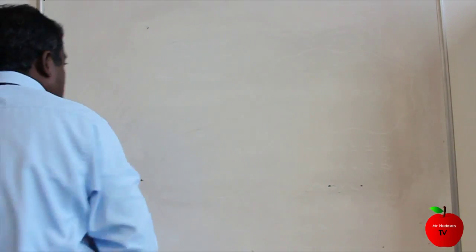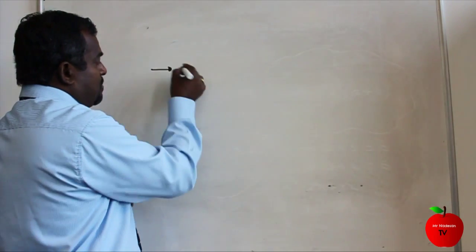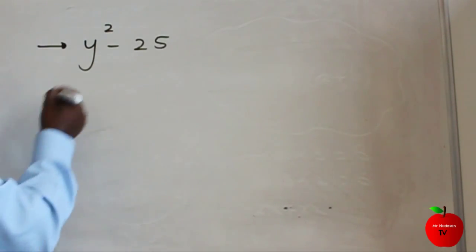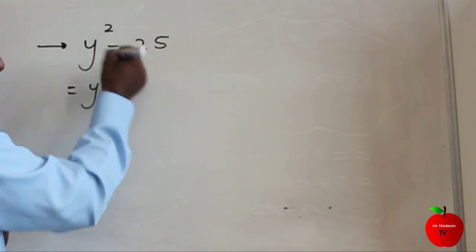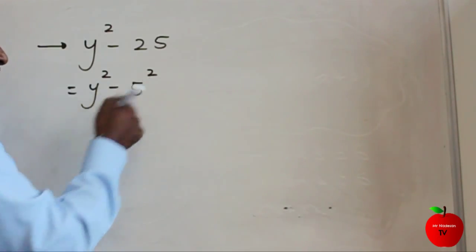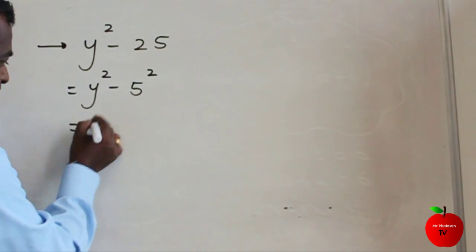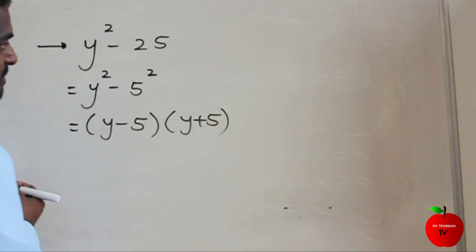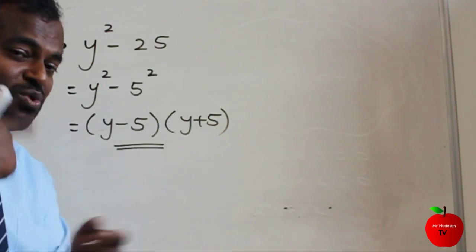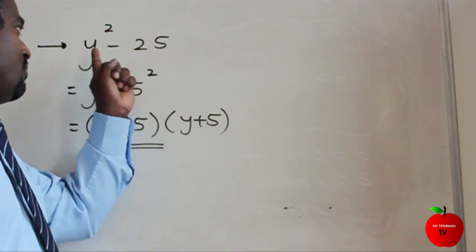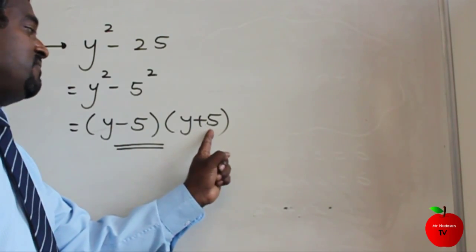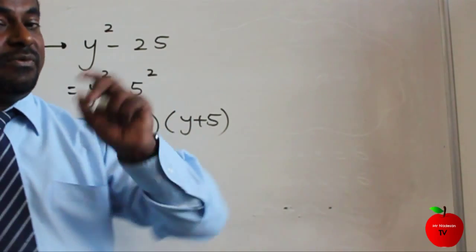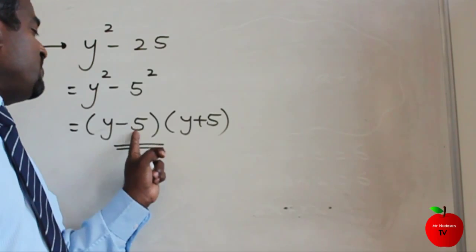I'll explain one more C grade example. We have y squared minus 25. You can write y squared minus 25 as y squared minus 5 squared, because 5 squared is 5 times 5 which equals 25. So the answer is y minus 5 and y plus 5. You can double-check by expanding: y times y gives y squared; plus 5y minus 5y cancels; and minus 5 times 5 gives minus 25.